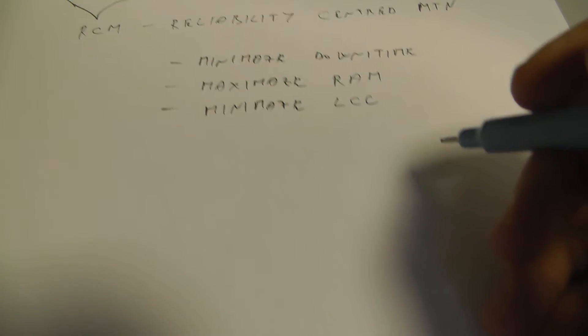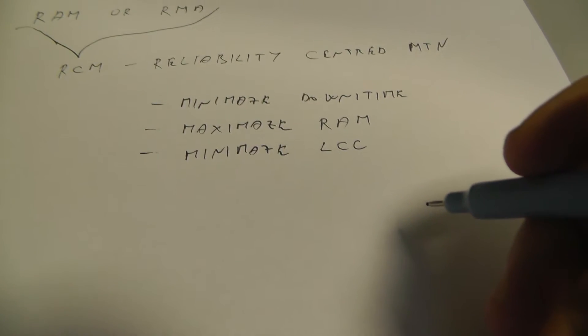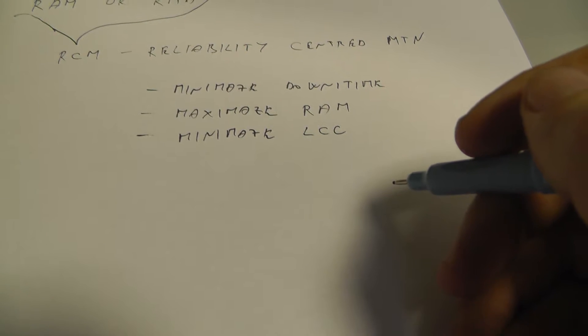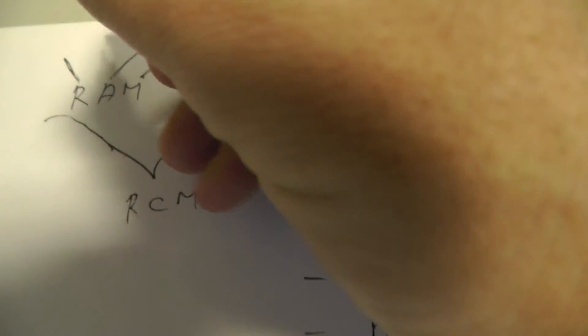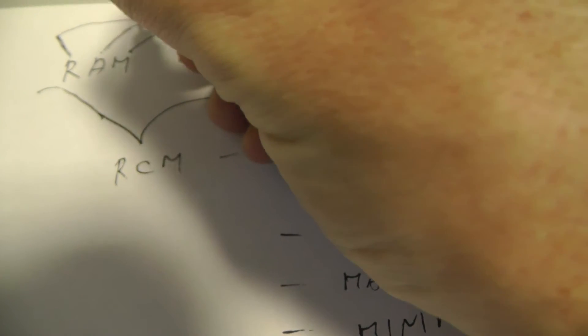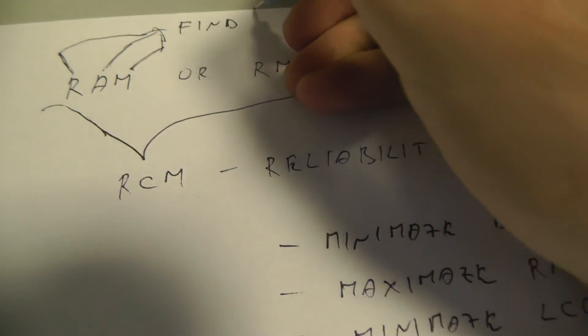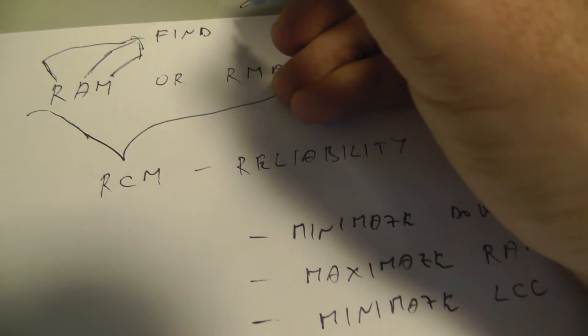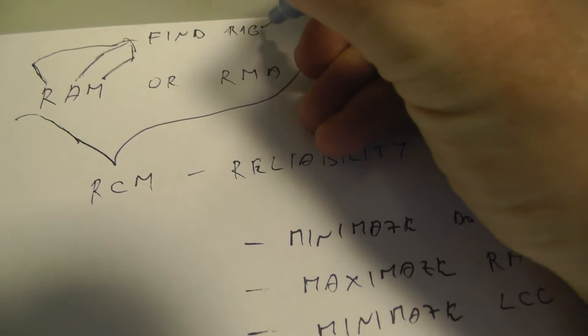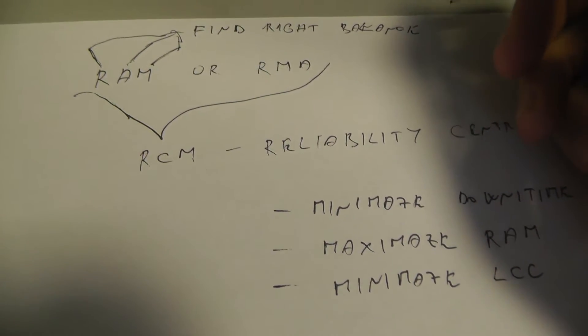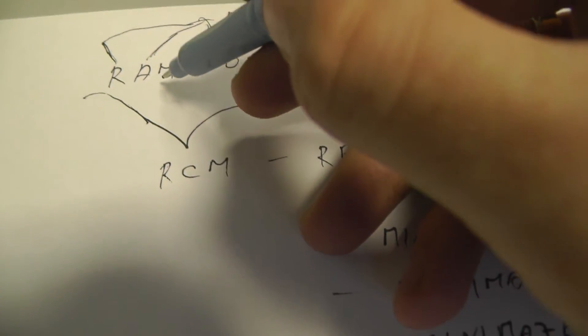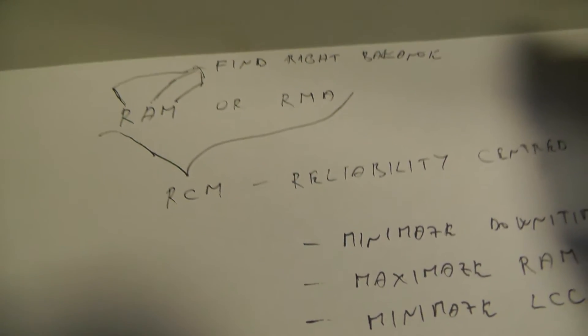What is the best option for Reliability Centered Maintenance? The best option is to find the right balance between reliability and maintainability — between these three: reliability, availability, and maintainability — together with life cycle costs.